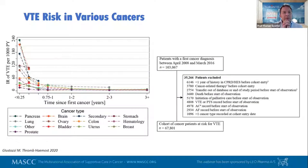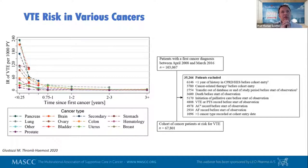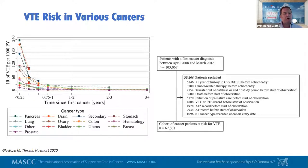VTE risk varies between cancer types — lung, breast, and pancreatic cancer all carry different risks. In a very large cohort of more than 100,000 patients, pancreatic cancer was at the very highest risk of venous thromboembolism, meaning we must think about thromboprophylaxis for those patients.